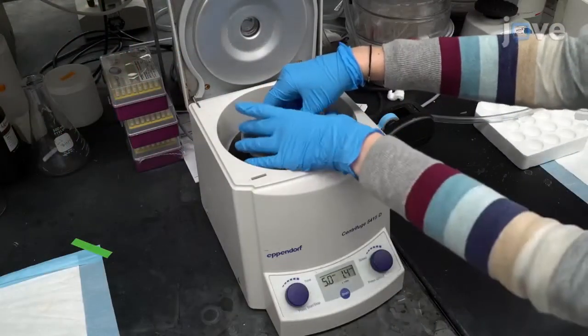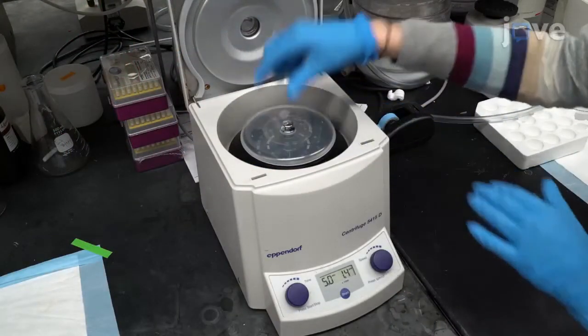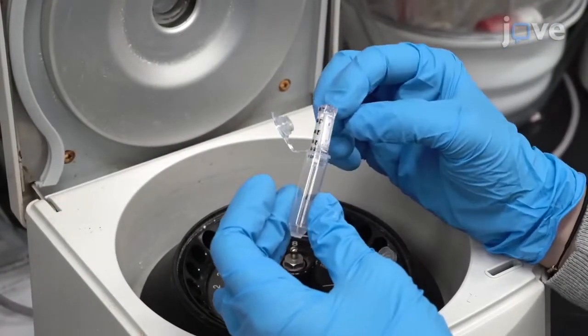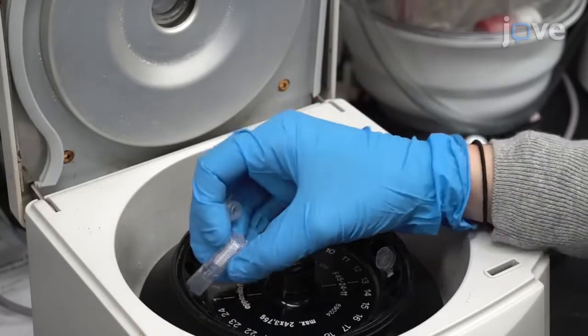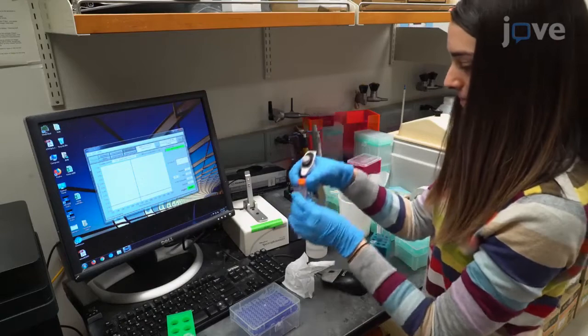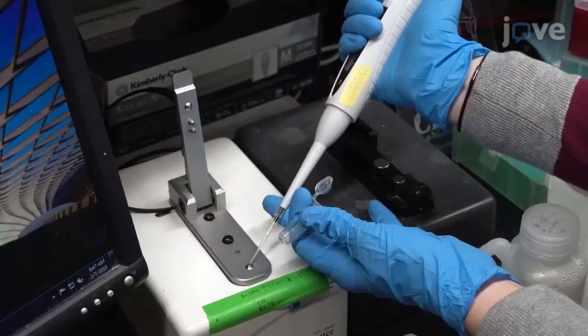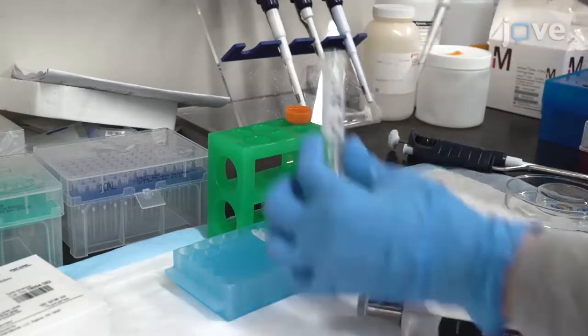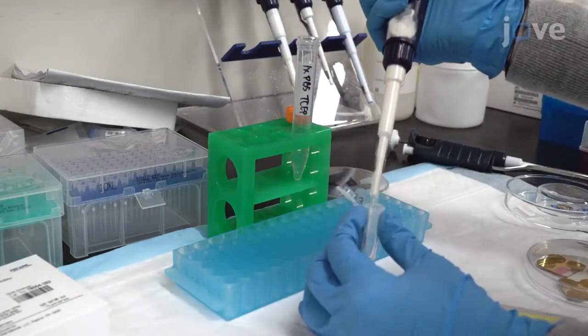Next, concentrate the purified polyprotein in a centrifugal filter. Then reverse the column and elute the protein into the buffer to be used in the experiment. Determine the appropriate protein concentration based on the absorbance at 280 nm, and then prepare 100 µL of a 100 µg per milliliter solution of the protein.